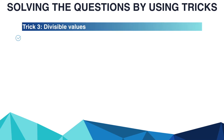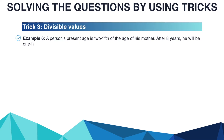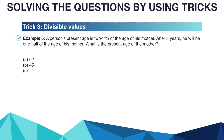The next trick is 'divisible value.' Consider this example: a person's present age is 2/5 of the age of his mother. After 8 years, he will be 1/2 of the age of his mother. What is the present age of the mother? Options are A: 62, B: 45, C: 40, D: 56. Representing P for the person and M for mother, P equals 2/5 of M. This indicates M should be divisible by 5.